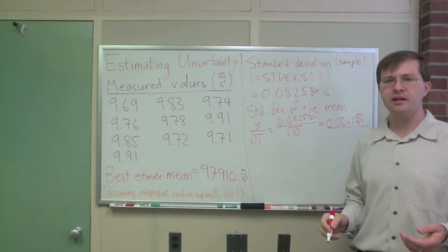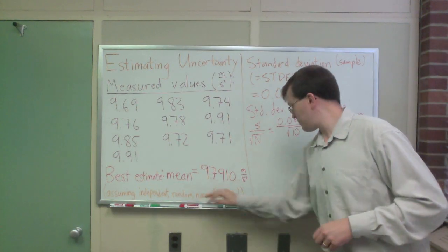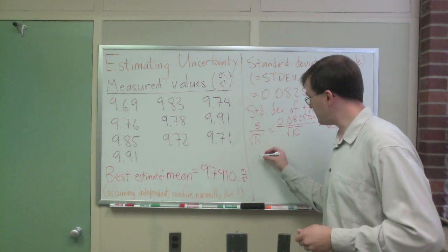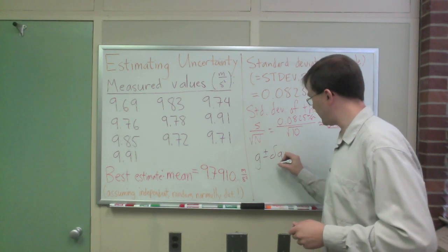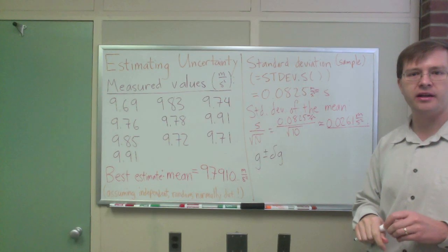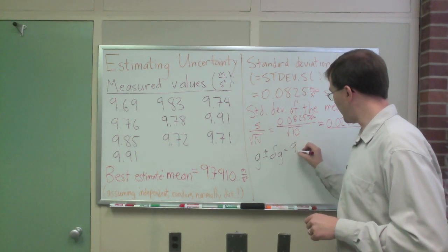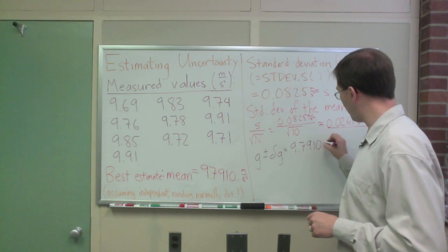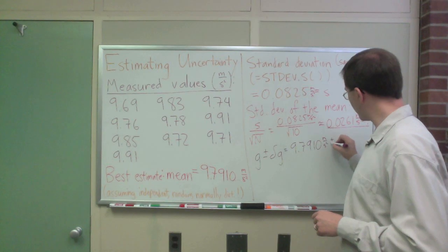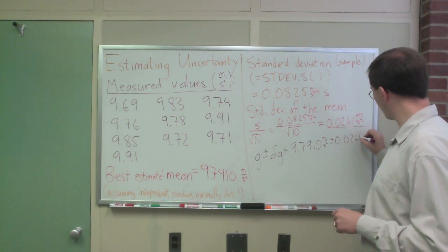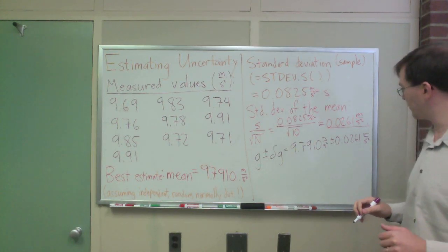So, if I were going to report this then, if I wanted to report my results, I would say, yes, my best estimate is that g, I report it in the form, g plus or minus delta g, that's a lower case Greek delta that I've written, g plus or minus delta g is equal to 9.7910 meters per second squared, plus or minus 0.0261 meters per second squared. That's almost my final number that I'm going to report.